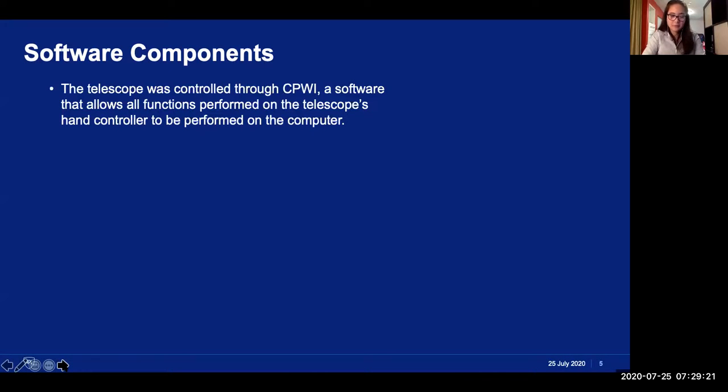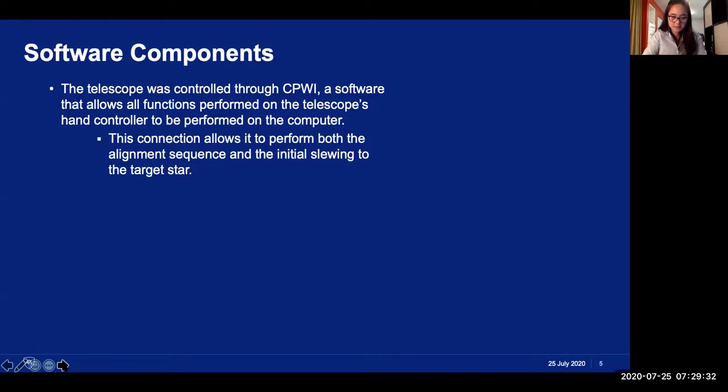So, with everything connected to the computer, my next goal was to get the system so that an observation could be run entirely through software on the computer, even if it was still having to be run manually. After all, clicking buttons on a computer could conceivably be automated, but trying to automatically push the buttons of the telescope's hand controller would be a whole other issue. I used Celestron's CPWI software to run everything that involved directly interacting with the telescope. So, the initial alignment process and the initial slewing to the target star. This accounts for everything that would normally be done through the telescope's hand controller. So, that removed the daunting possibility of having to deal with physical buttons.